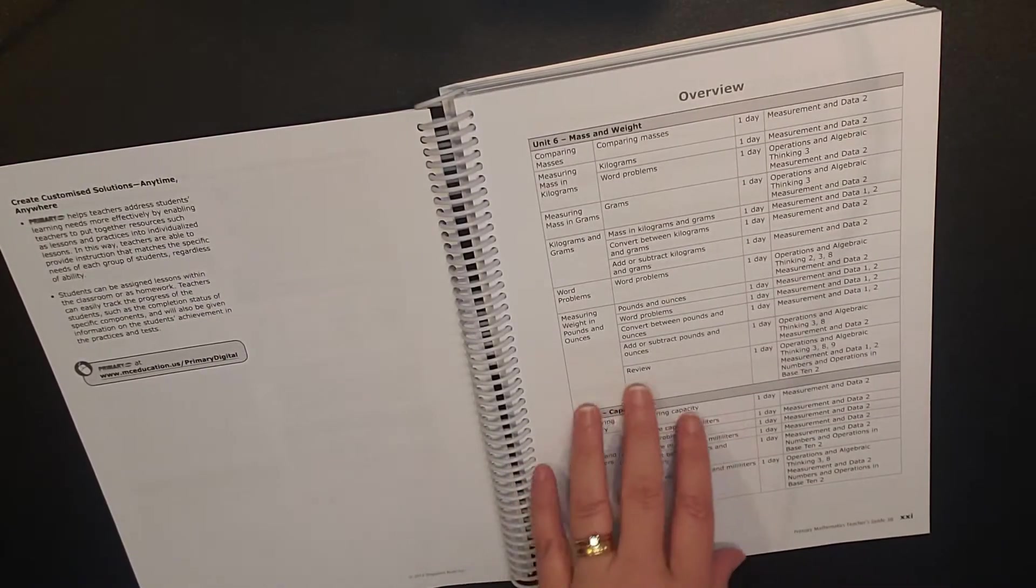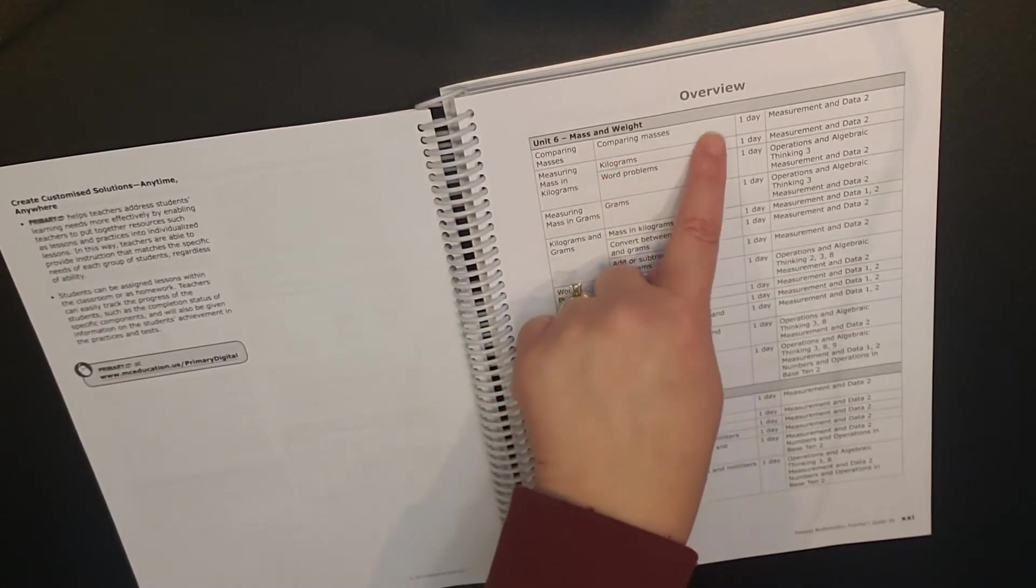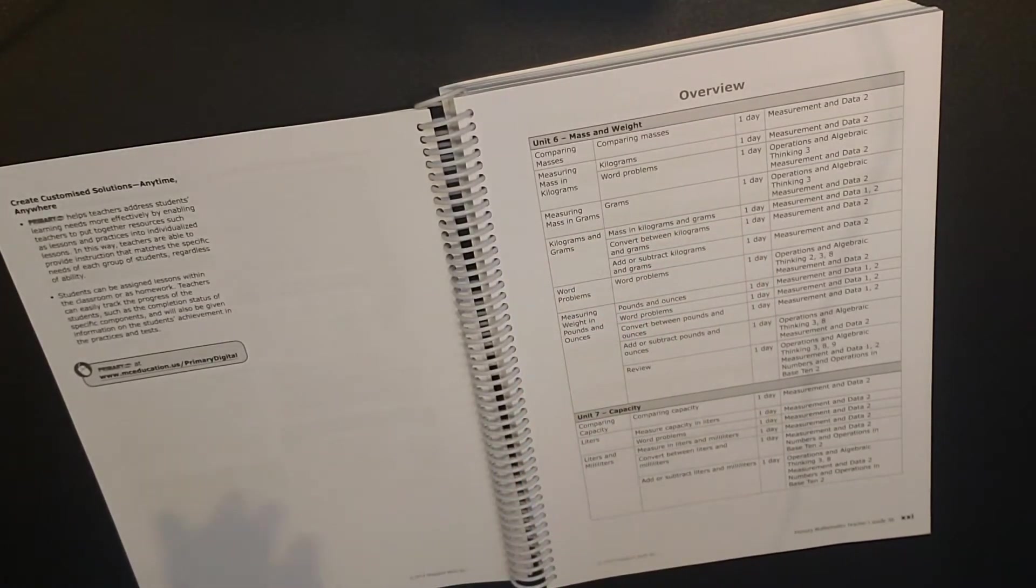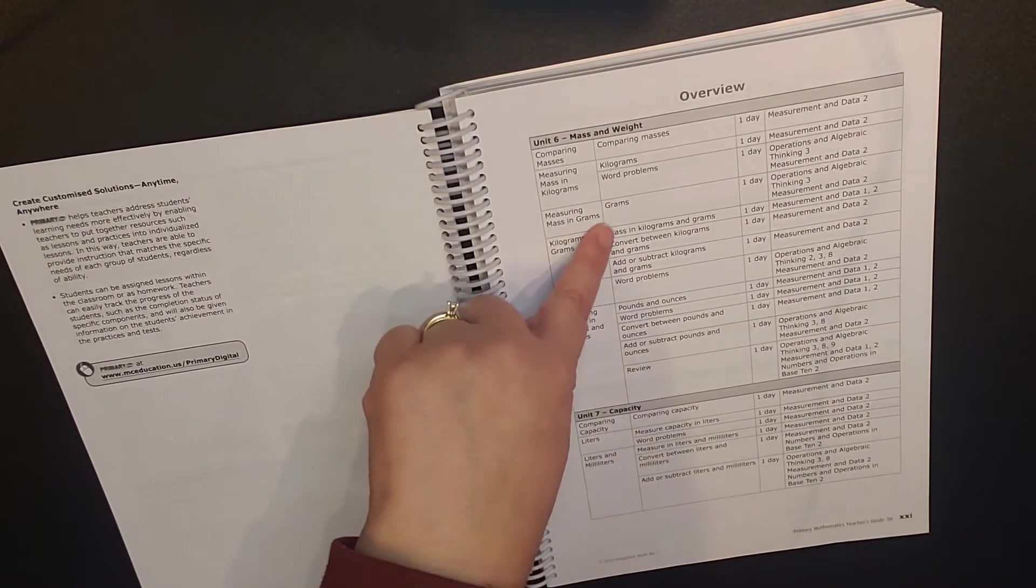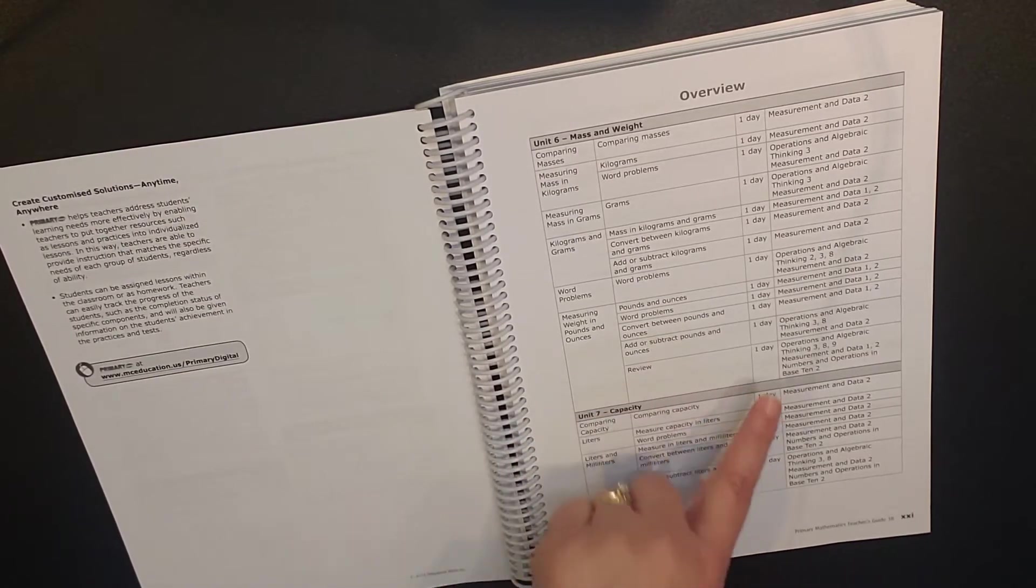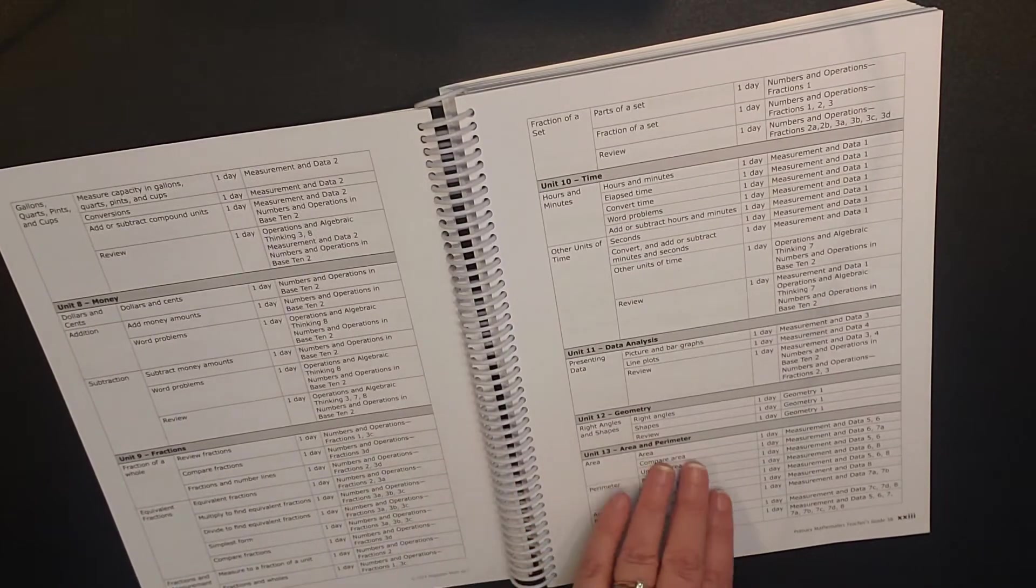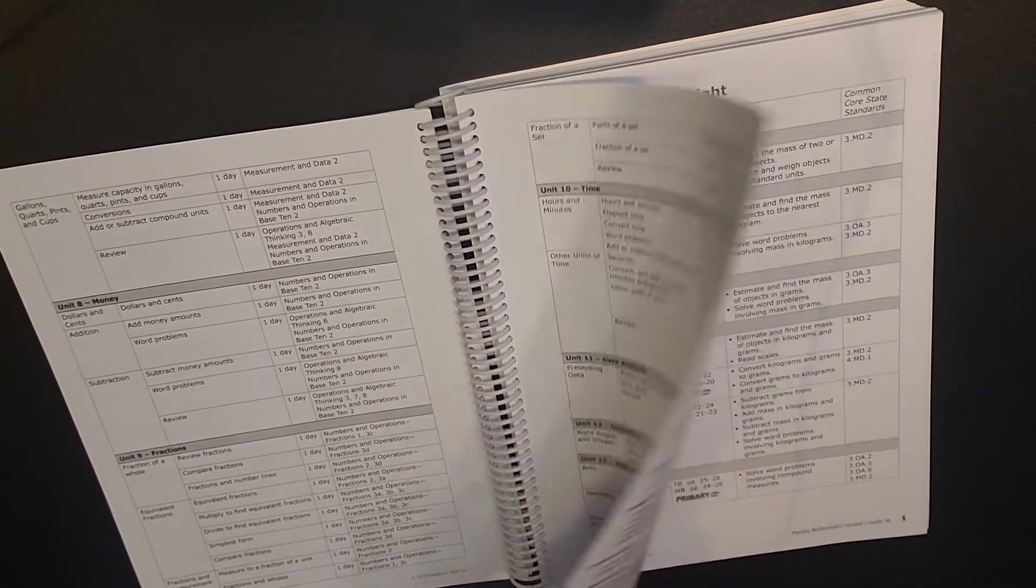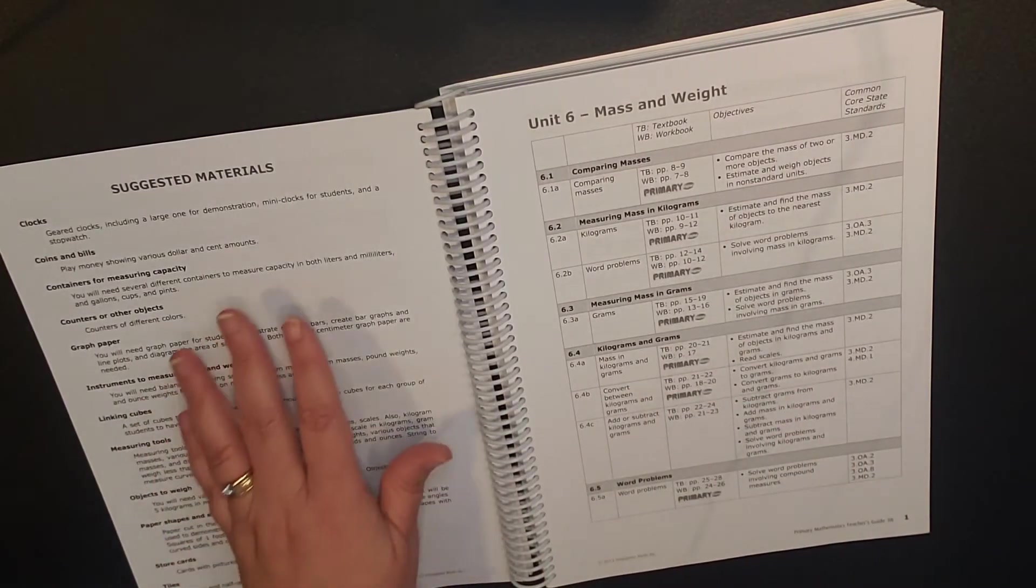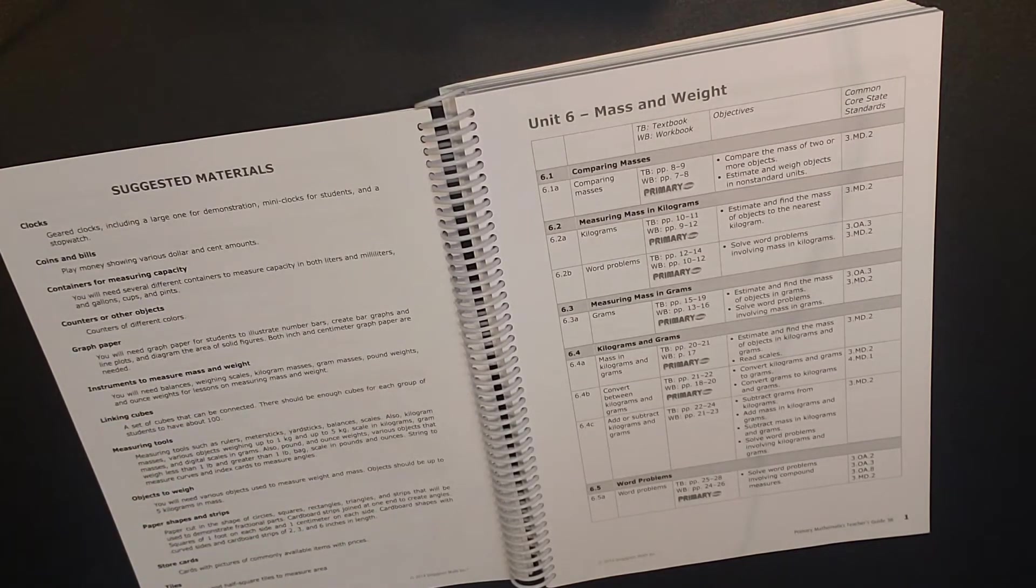This would be considered your lesson planner. So within a unit for each different concept, this will tell you how many days you need to be working on it or how many days they recommend that you work on it. For example, with kilograms and grams, they've separated this into three days. But then down here where we're talking about comparing capacity, this is one day.